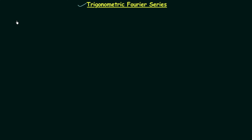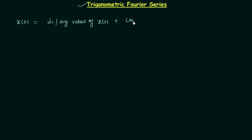Let's say there is a periodic signal x(t). In the case of trigonometric Fourier series expansion, we can represent this periodic signal as the sum of the DC or average value of signal x(t), plus all the cosine terms, plus all the sine terms.